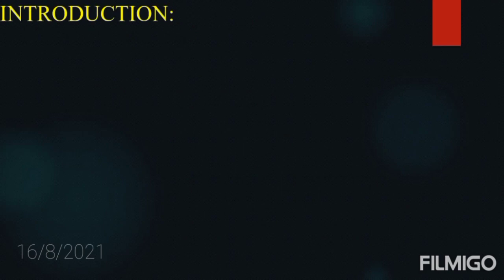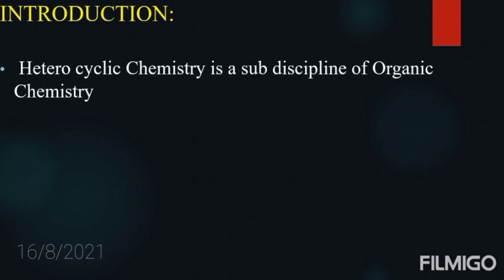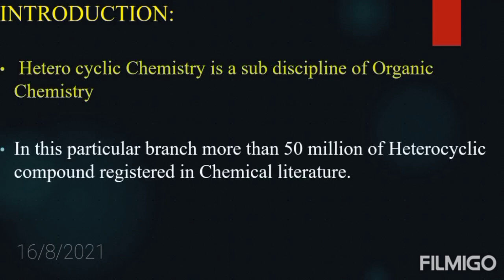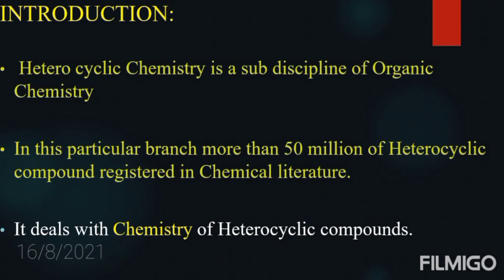Let us see the introduction. Heterocyclic chemistry is a sub-discipline of organic chemistry. Till now, more than 50 million heterocyclic compounds are registered in chemical literature. It is a very important and interesting topic in organic chemistry. The term chemistry includes preparation, properties — both physical and chemical — and the synthetic uses of a particular compound.